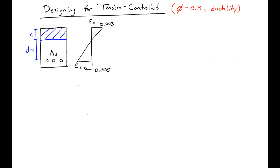What we're going to find in this video is the amount of steel area so that we'll have a strain in the steel of 0.005.